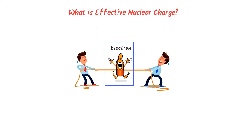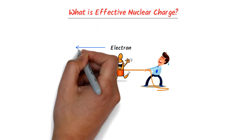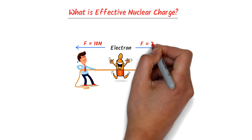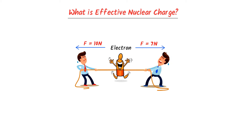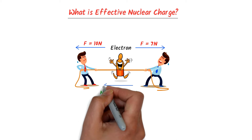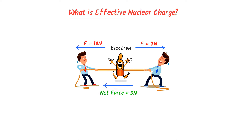This electron experiences two forces. One man is exerting 10N force on the electron in this direction, while another man is exerting 7N force on the electron in this direction. The total force or the net force is 3N on the electron in this direction.